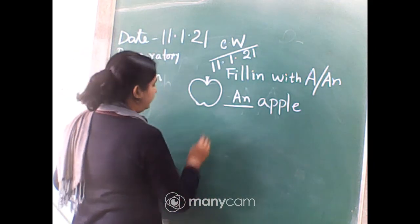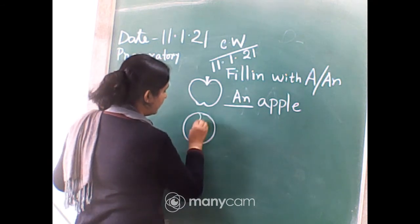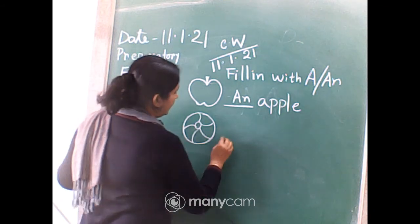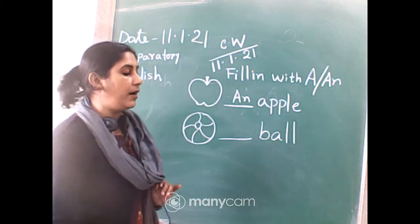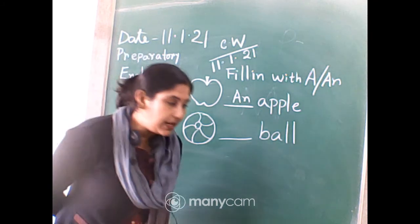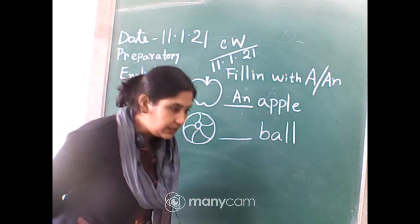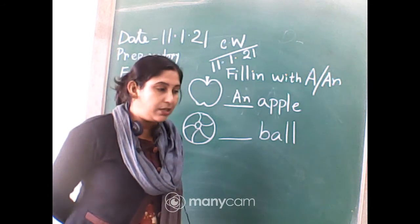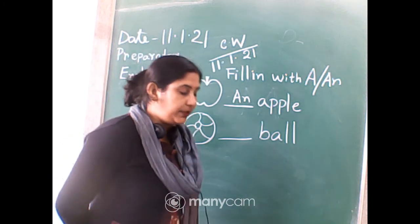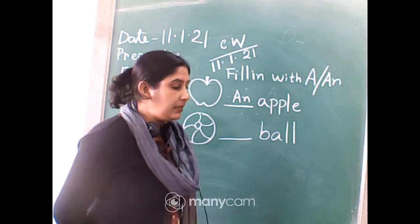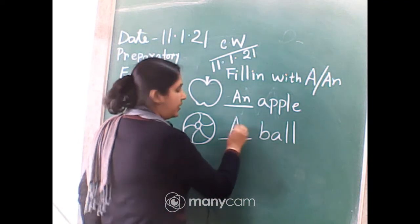Now the next one: dash ball. A ball or AN ball — what will be the answer? Sanchoyon, Nivedita, Sreshta, Trayambha — all correct. Povitra, now you are correct also. The answer is A ball. Good.